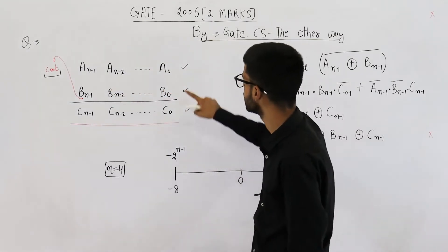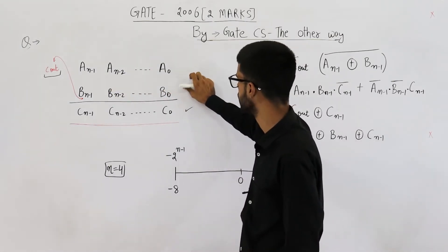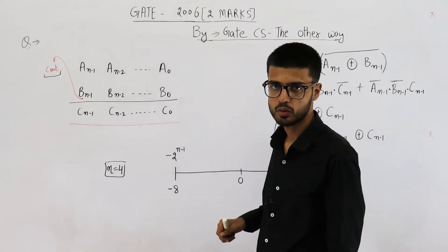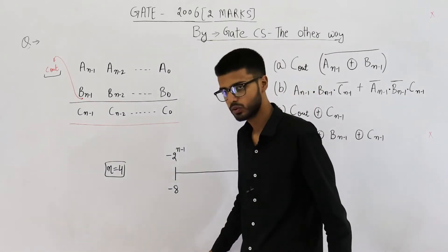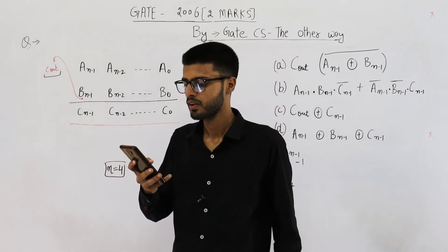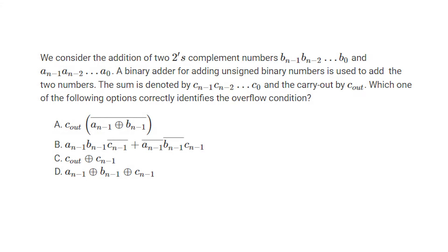They are saying: if you add two numbers A and B, under what conditions will you get an overflow? We consider the addition of two two's complement numbers B and A. You can see both of these numbers are n-bit. A binary adder for adding unsigned binary numbers is used. The sum is denoted by C and the carry-out is denoted by C out. The sum is also n-bit. Which of the following options correctly identifies the overflow condition?